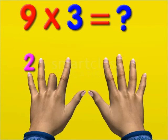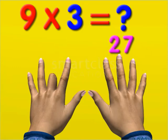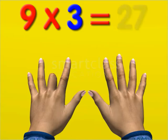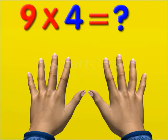So, you get 9 times 3 is equal to 27. To find 9 times 4, bend the fourth finger of your left hand.